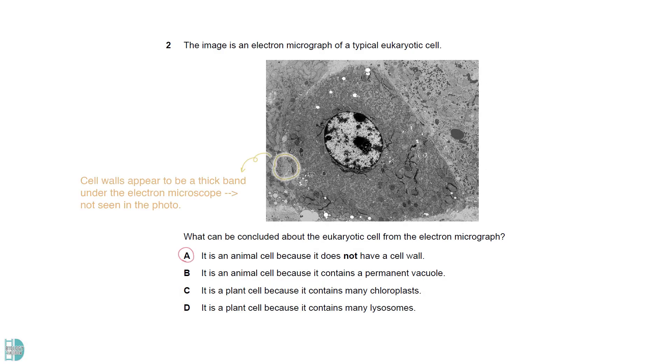A is correct because the cell walls appear to be a thick band under the electron microscope. B is incorrect because animal cells do not have a permanent vacuole. C is wrong because chloroplasts cannot be seen. D is incorrect because lysosomes are not found in plant cells.